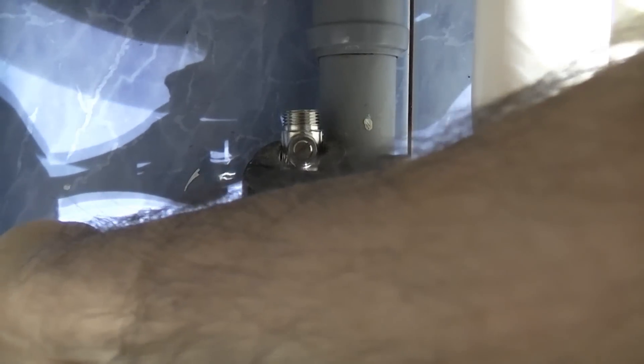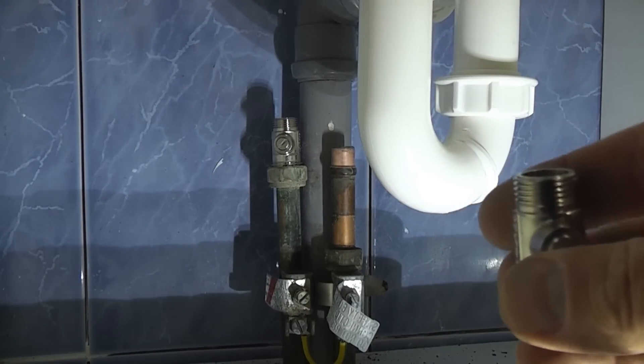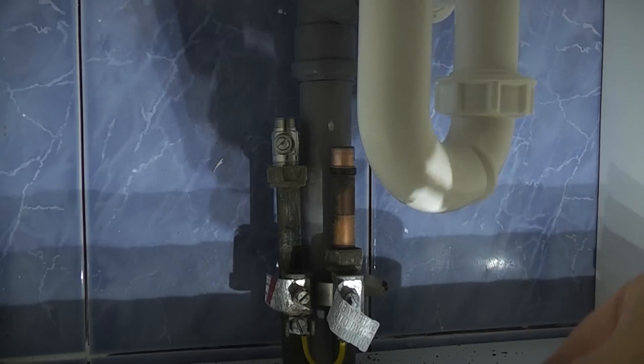And it is important that we get these tight because we don't want them to leak. I'm going to do exactly the same with the cold water isolation valve. I'm just going to put that on there and tighten up the nut.